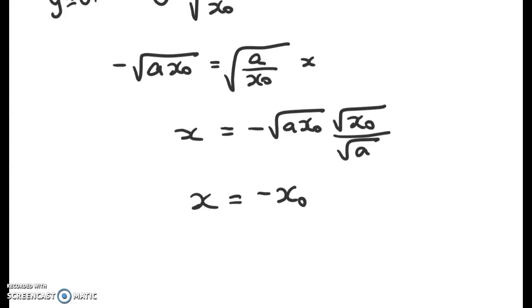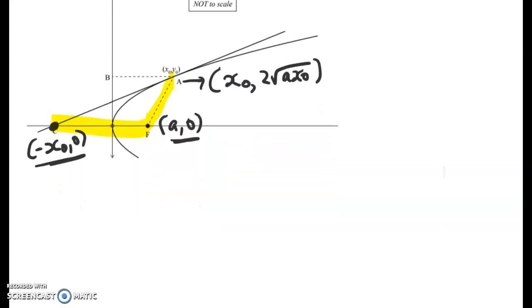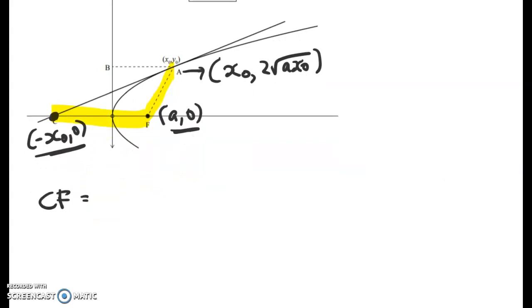This is starting to look really nice. Let's put some of those values back onto my picture. This point C is (-x₀, 0) and this point here is (a, 0). Remember what we've got to show now is that we've got an isosceles triangle, so we're trying to show that the length of this is equal to the length of this. And this point here, A, is (x₀, 2√(ax₀)). So what do I have to do now? Well, we have to find CF.